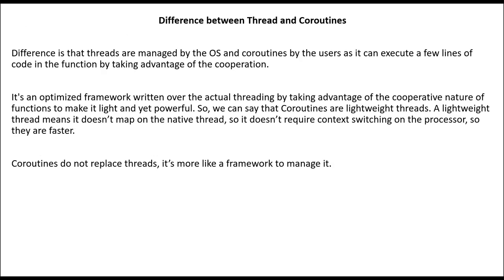Let's see the difference between threads and coroutines. Threads are managed by the OS and coroutines are managed by the user. It can execute a few lines of code from one function and take advantage of the cooperation between two functions. We can also say coroutines are an optimized framework written over the actual threading by taking advantage of the cooperative nature of functions to make it lightweight and powerful.